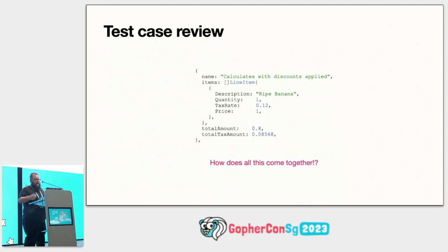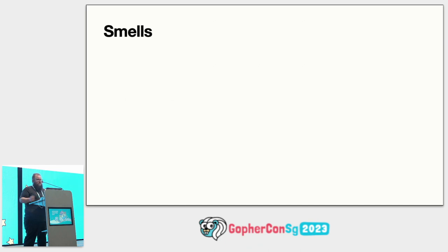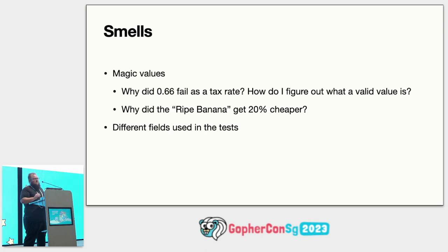So let's step back and think about what we're seeing in these tests. There are a couple of things going on. First, we have magic values: why is 66% invalid? How do I know what's valid? And why is that ripe banana 20% cheaper? I'm also noticing that some of these fields don't seem to be used in every test case. That feels off, because if you can just add another field, after a couple of months you'll have 50 fields and a really rough time figuring out what's going on.